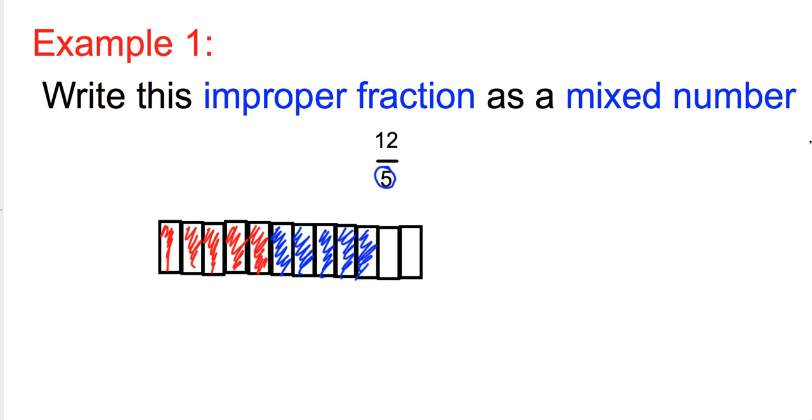And then you can see right at the end here I've got two little pieces left over. So what I can say is well this whole part here represents one whole, and this whole blue part here because there's five of them also represents one whole, and then we've got two fifths left.